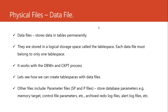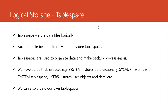We also have the archived redo log file, which stores the redo log entries from the redo log. We also have the alert log file, which alerts us of any error that happens in the database. These are the physical files in Oracle — the major ones being the control file, the data file, and the redo log file. Beyond those, we have the logical storage structures: tablespace, segment, extents, and blocks.